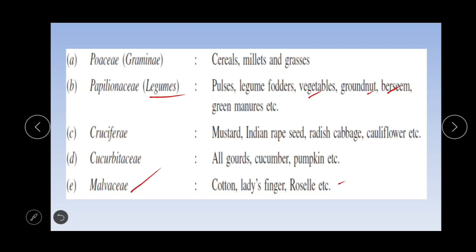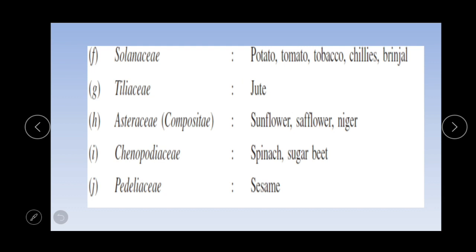Cotton, lady's finger, and roselle belong to Malvaceae family. Potato, tomato, tobacco, chilies, and brinjal belong to Solanaceae family. Jute belongs to Tiliaceae family - very very important point.